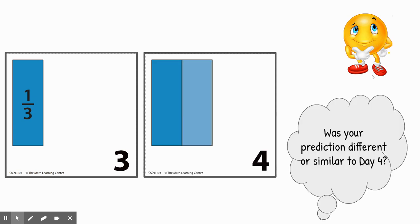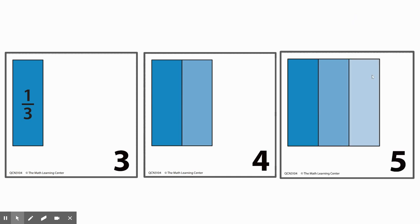There it is. I wonder, was your prediction different, or was it similar to day four? What do you think day five might look like? Again, think about any pattern that you're noticing in this work. Here it comes. There is day five.